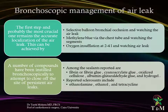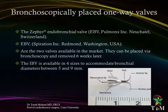Bronchoscopic management of air leak: The first step, and probably the most crucial one, remains the accurate localization of the air leak. This can be achieved by selective balloon bronchial occlusion and watching the air leak, installation of methylene blue via the chest tube and watching the segments through the bronchoscope, or oxygen insufflation at 2–4 L via the bronchoscope and watching the air leak. A number of compounds have been instilled bronchoscopically to close off the site of persistent leaks. Sealants reported include fibrin glue, cyanoacrylate glue, oxidized cellulose, albumin-glutaraldehyde glue, and hydrogel. Reported sclerosants include ethanolamine, ethanol, and tetracycline. Bronchoscopically placed one-way valves — Zephyr and Spiration — can be placed via bronchoscope and removed six weeks later. Four sizes are available to accommodate bronchial diameters between 5 and 9 mm, with small series published reporting success rates up to 55%.